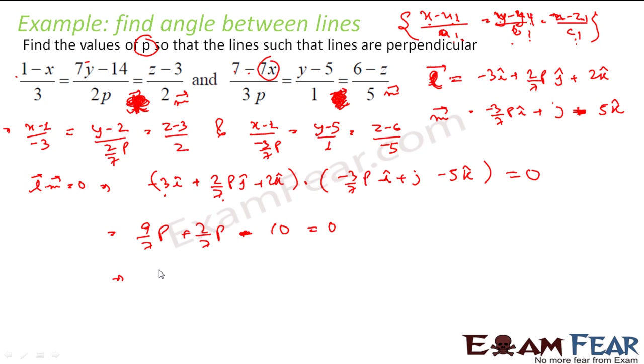Now you solve this, you get 9 by 7p. So 9 plus 2, 11 by 7p is equal to 10, or you get p as 7 into 10 by 11, that is 70 by 11 and that is my answer.